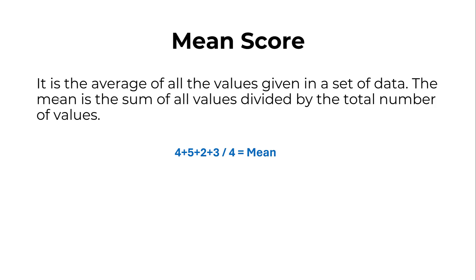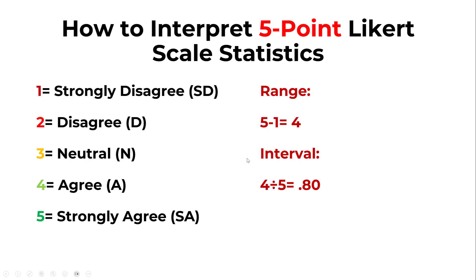The mean is the sum of all values divided by the total number of values. So we have different Likert scale items rated as four, five, two, three, etc. We just sum them up and divide by the number of answers — here one, two, three, four — so the number is four. This gives us the mean score.